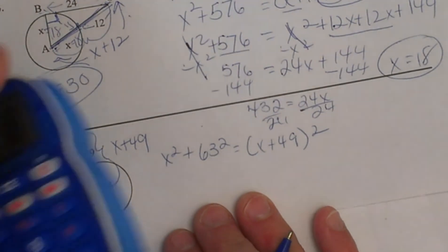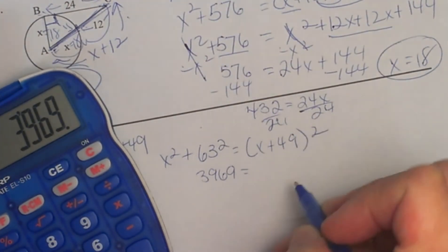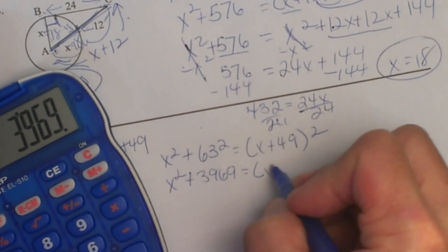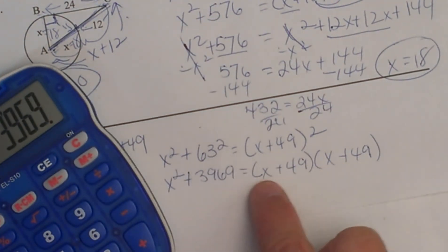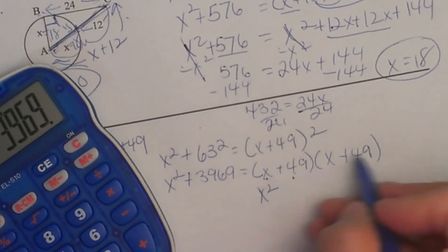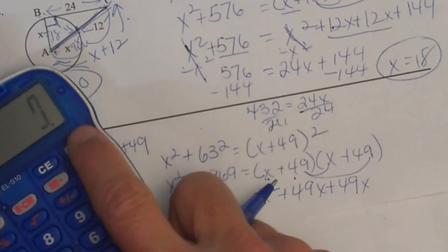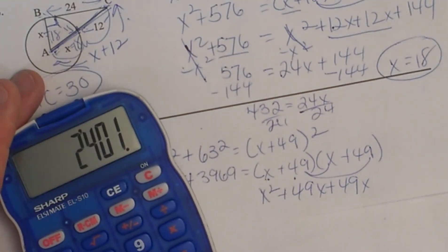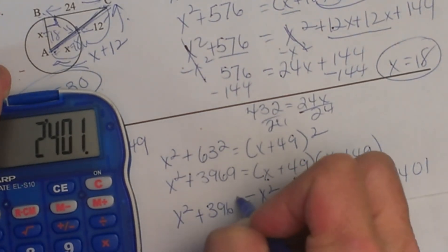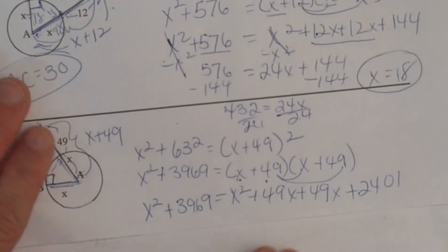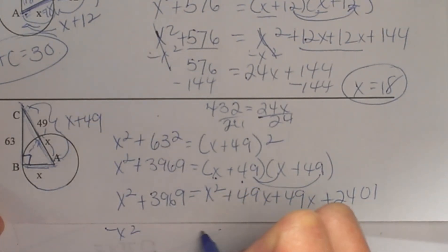Let's do some cleaning up. 63 times 63 gives me 3,969. Bringing down x squared on the left. For x plus 49 quantity squared, I FOIL: first, x times x is x squared; outer, x times 49 is 49x; inner, 49 times x is 49x; last, 49 times 49 is 2,401. So the right side is x squared plus 98x plus 2,401. The next step: subtract x squared from both sides and they cancel out.